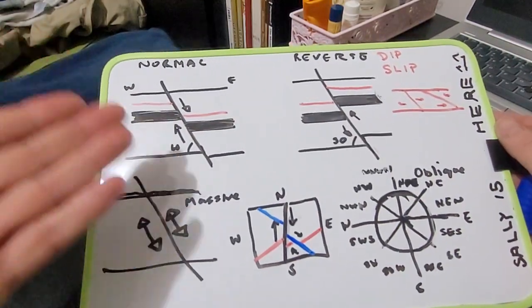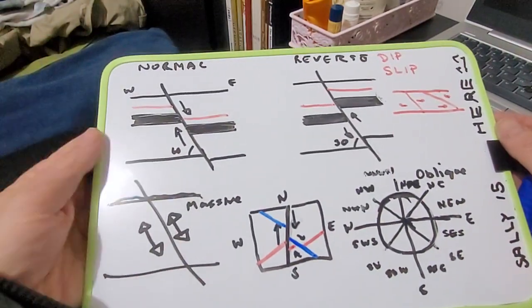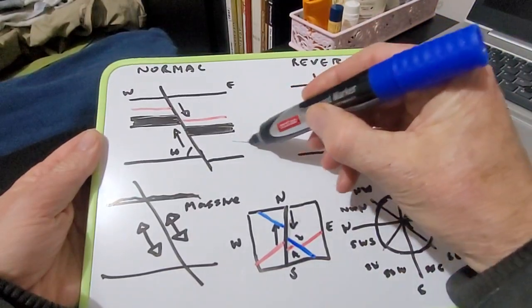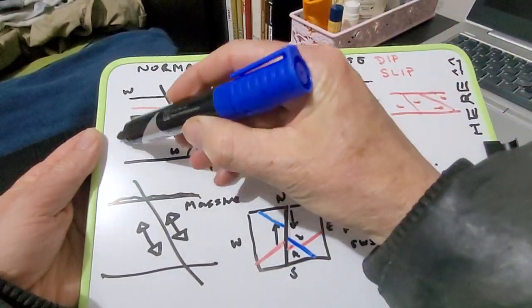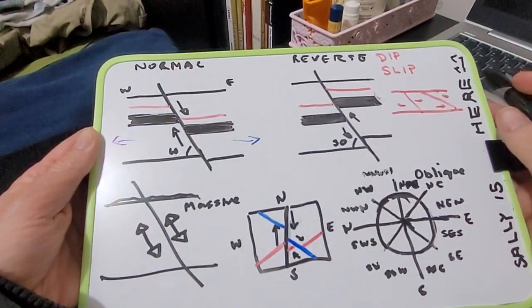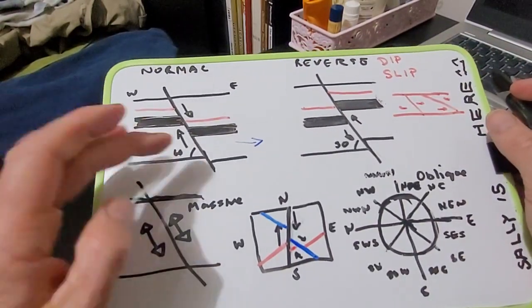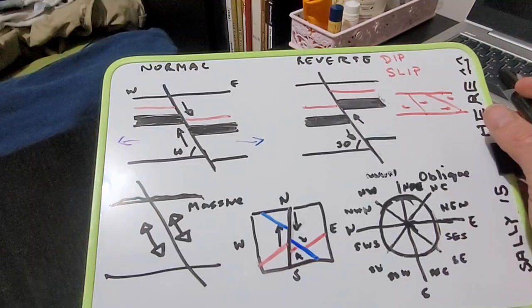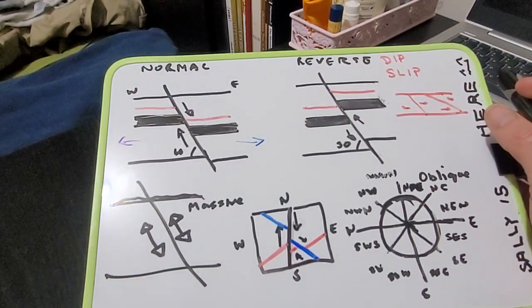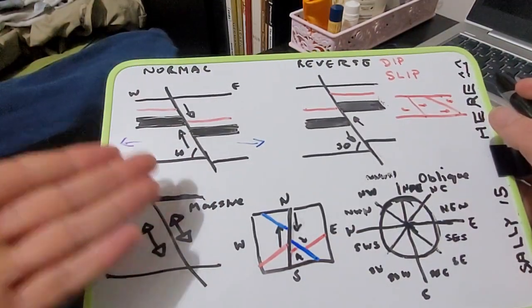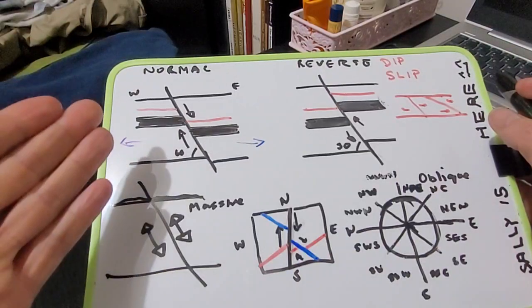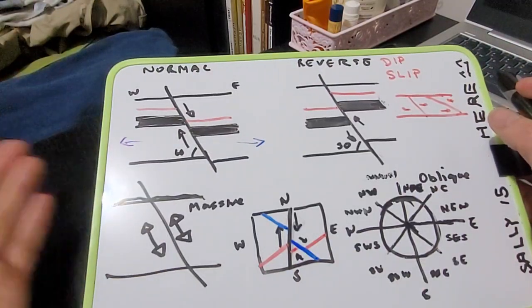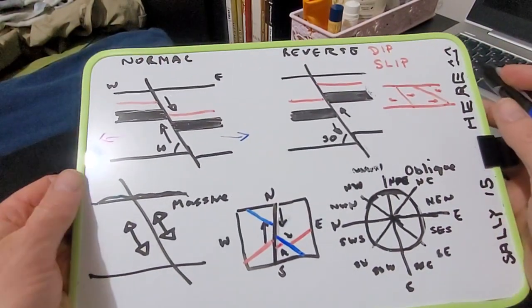So the normal fault is because of a spreading center. So obviously these two are moving in opposite directions. And the angle is about roughly 60 degrees. It can be a different type of angle. So it is a steep angle because it's a lot easier based on physics for the rock to actually be pulled apart.